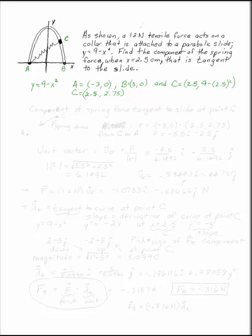Once we've defined the problem, we need to figure out what we're given and what we're looking for. We want the component of F tangent to the curve at point C. The spring force pulls the traveler at point C down, as the spring tries to contract. Since we have a magnitude and a line of action, we need to find the position vector, then the unit vector, and multiply by the magnitude of the force.